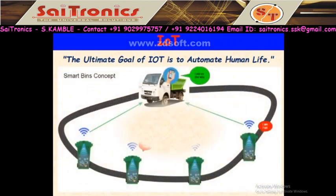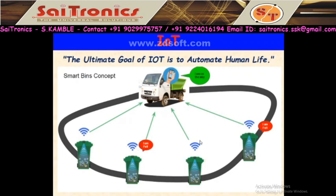Take one example: the smart bins concept. In cities there are different types of sensors on dust bins. That sensor will send data — if any dust bin is full, it sends a signal. For example, it will signal 'I am full,' so the driver knows which dust bin is full and can collect it from that location. This is one example of a smart city concept.